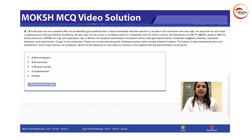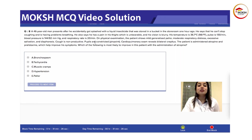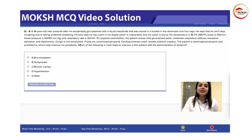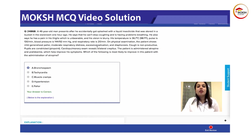On physical examination he has pallor, respiratory distress, excessive salivation and diaphoresis. The cough is non-productive. He has pinpoint pupils. There is bilateral crepitus on cardiopulmonary examination. This patient has organophosphate poisoning — classic symptoms.